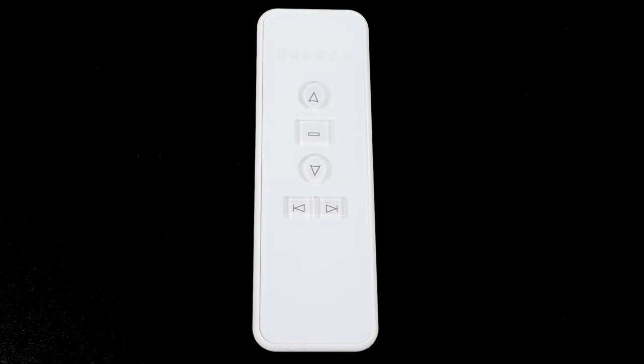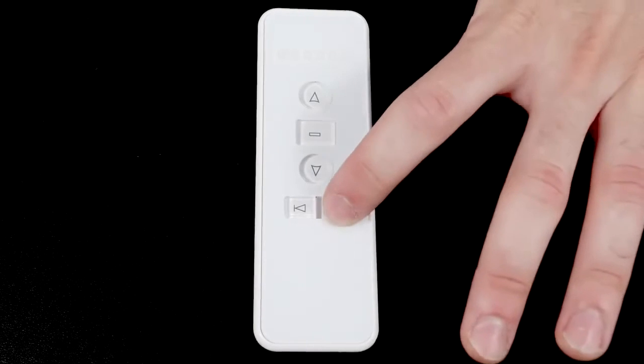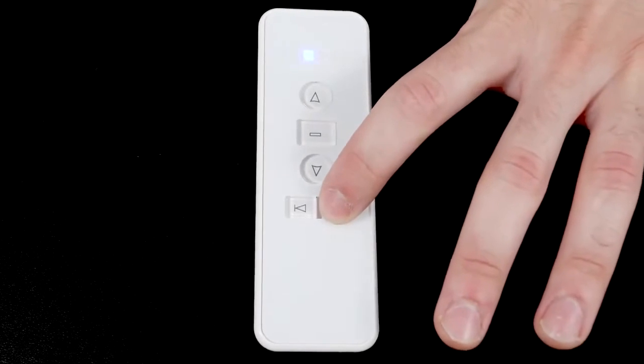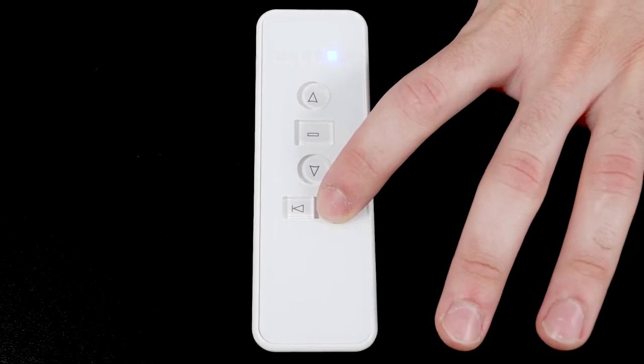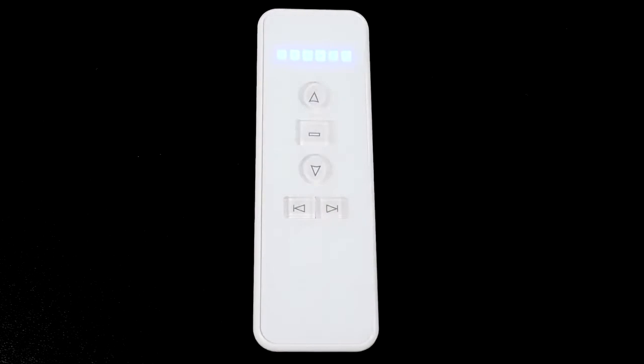Your remote can operate up to six individual channels. The lights at the top of the remote indicate which channel you're currently operating. If all six lights are illuminated, then the remote will operate all six channels at the same time. We highly recommend programming only one shade to each channel to avoid complications during programming and operation.